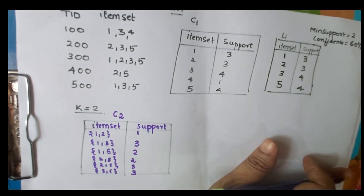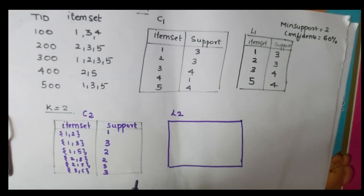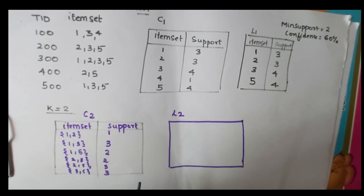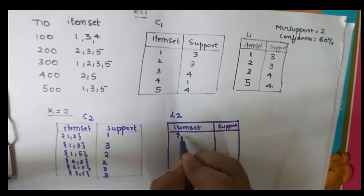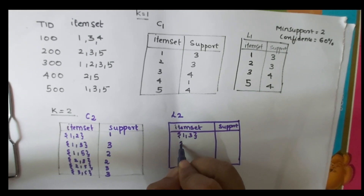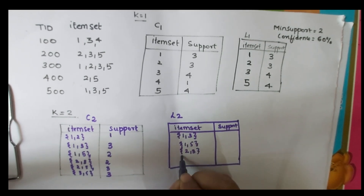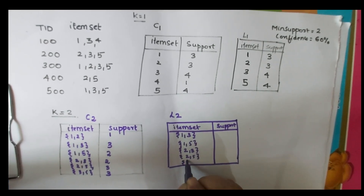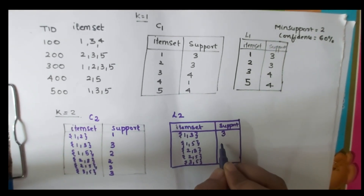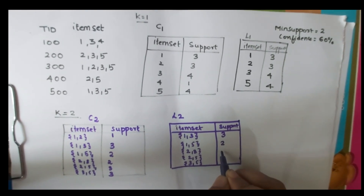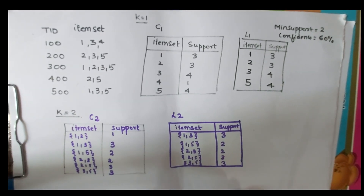From C2, we generate L2 by keeping only those item sets that satisfy the minimum support of 2. The pair {1,2} is removed since its support is 1. L2 consists of: {1,3} with support 3, {1,5} with support 2, {2,3} with support 2, {2,5} with support 3, and {3,5} with support 3.